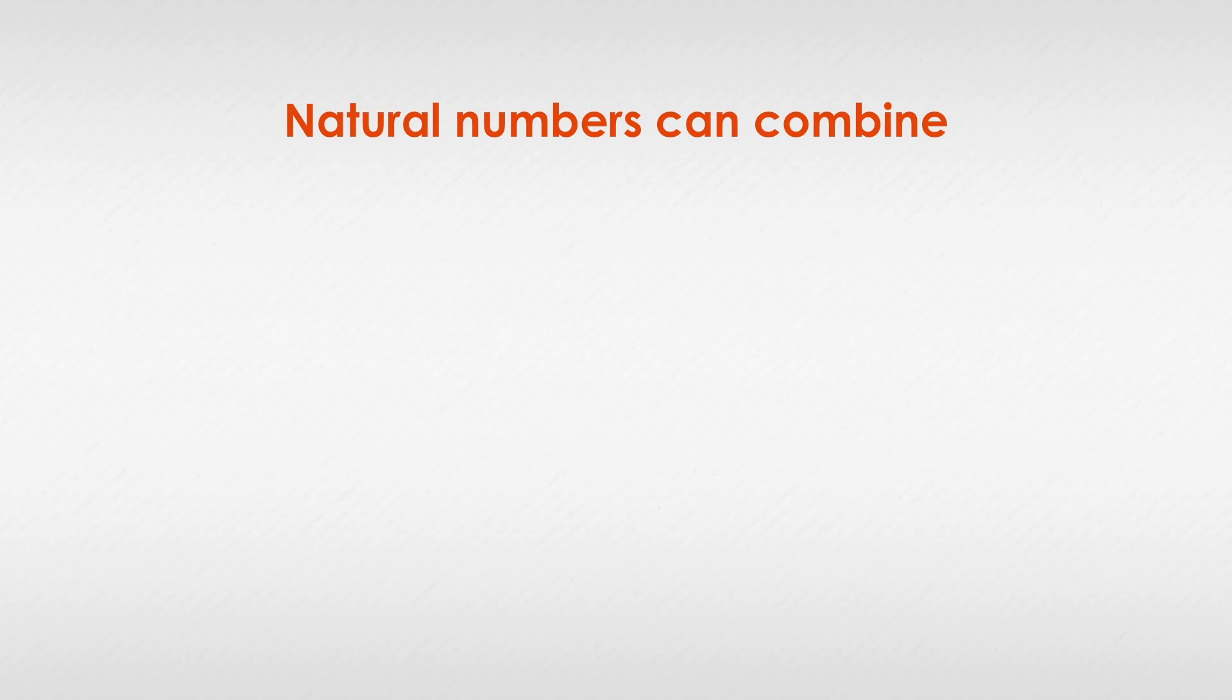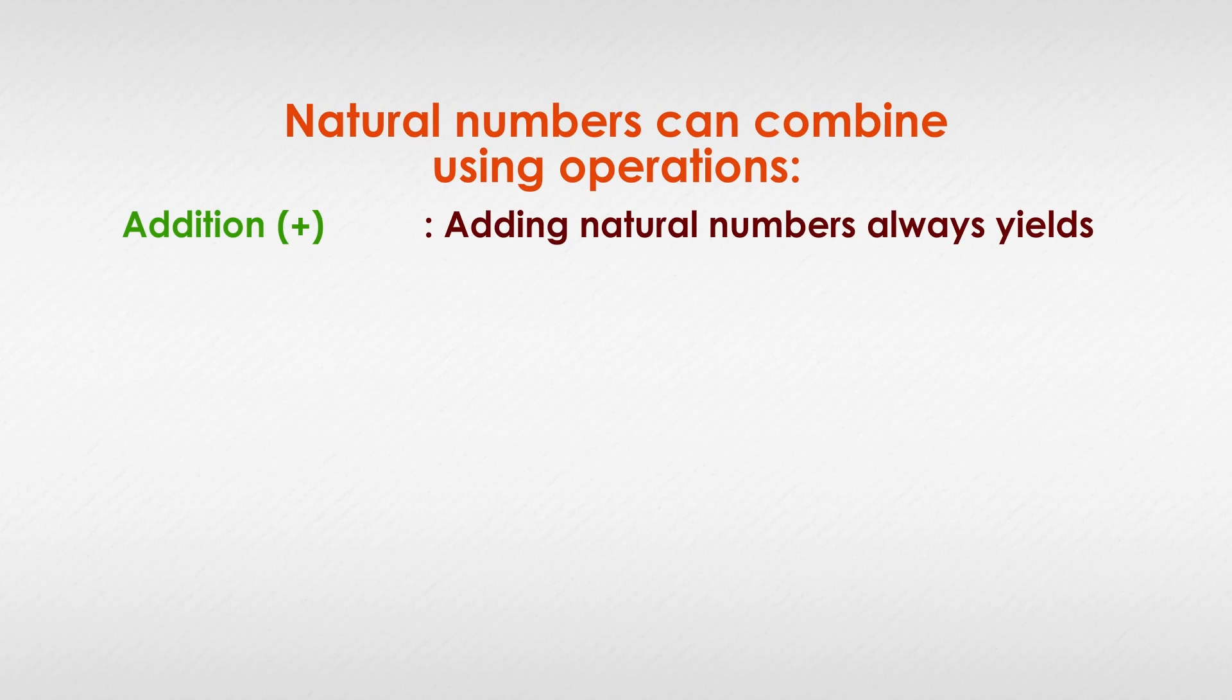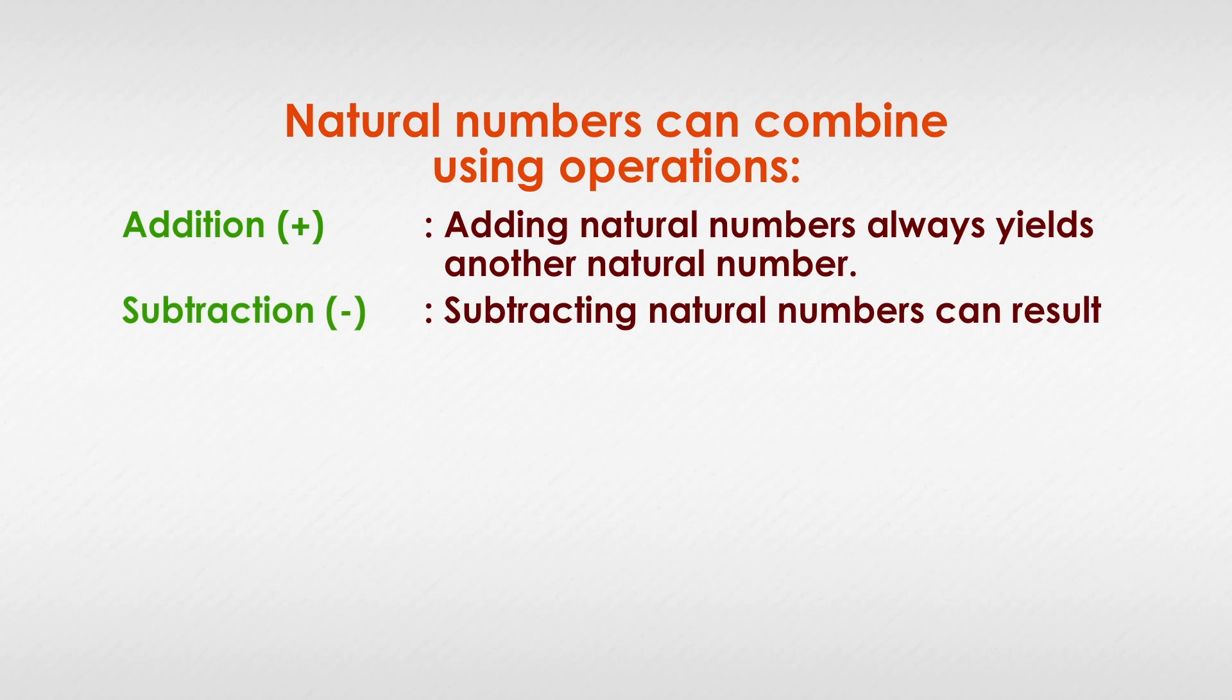Natural numbers can combine using operations. Addition: Adding natural numbers always yields another natural number. Subtraction: Subtracting natural numbers can result in a negative integer.